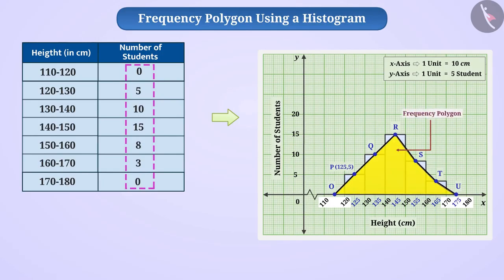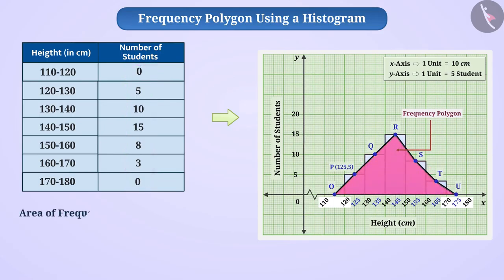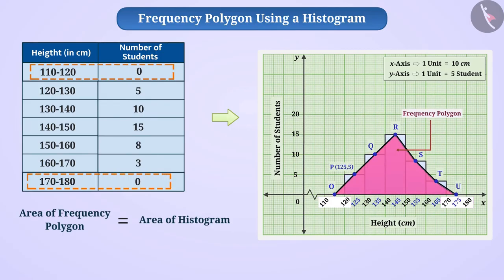The triangles located outside the line graph can be arranged inside the line graph, showing that the area of the frequency polygon is equal to the area of the histogram. In this way, the class intervals of zero frequency help us equalize the area of the frequency polygon to the area of the histogram.